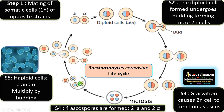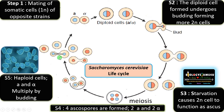These haploid cells — that is, A and alpha haploid cells — are released and multiply by budding, initiating the haploid yeast phase. The A and alpha strains undergo budding continuously, beginning the haploid yeast phase.